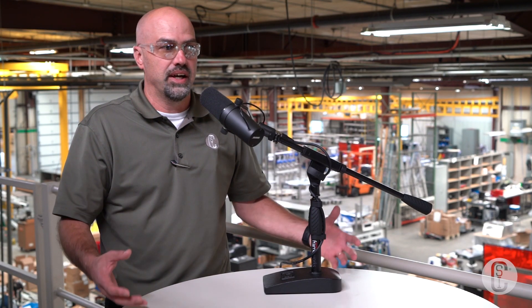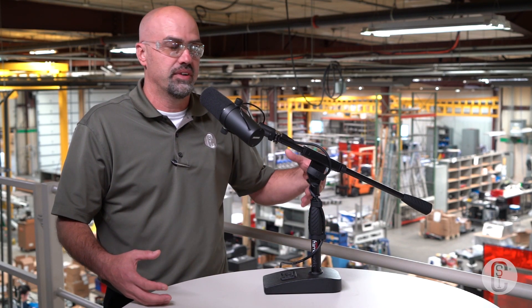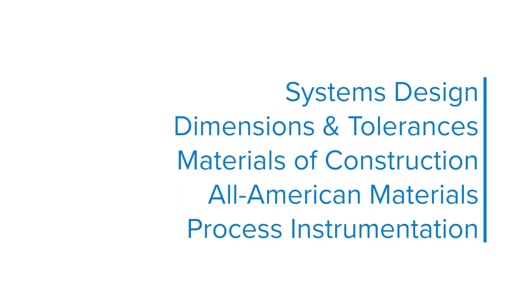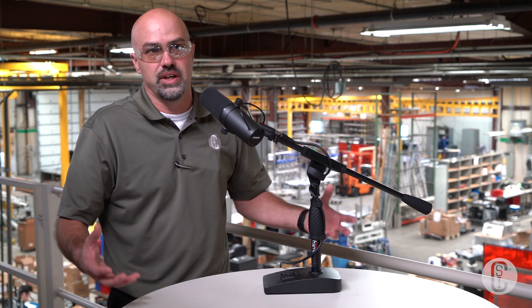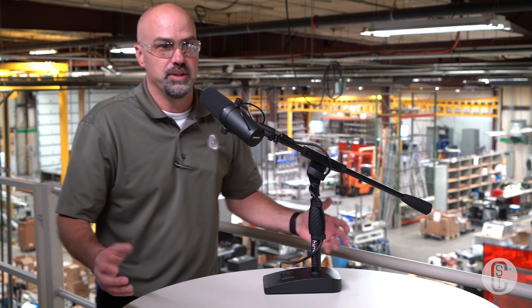Within the design guide, we cover not only systems designs, but also dimensions and tolerances, materials of construction, polymeric materials, and process instrumentation. Those are the kinds of things involved within the BPE standard.